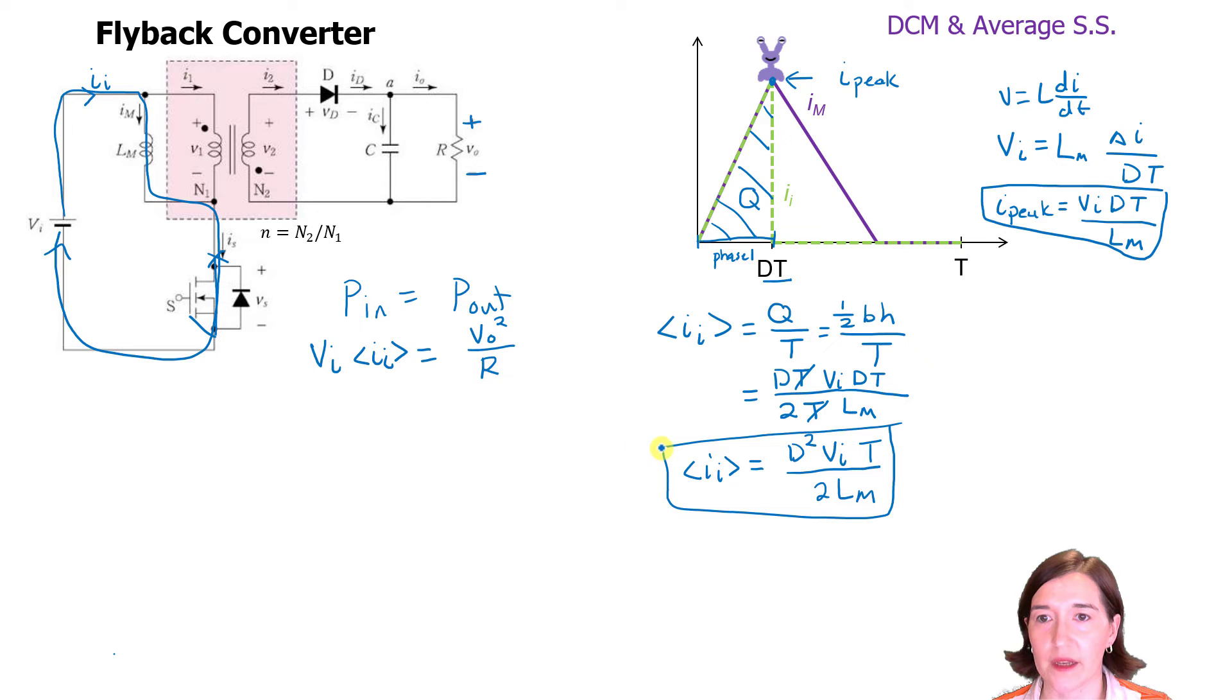And now we throw that back into here, substitute it here. And now we can try to rearrange our equation. So let's continue on the left side here. We have VI. And we're going to multiply by the average value here. So we're going to get a D squared. We're getting another VI. So I'm going to square this here.